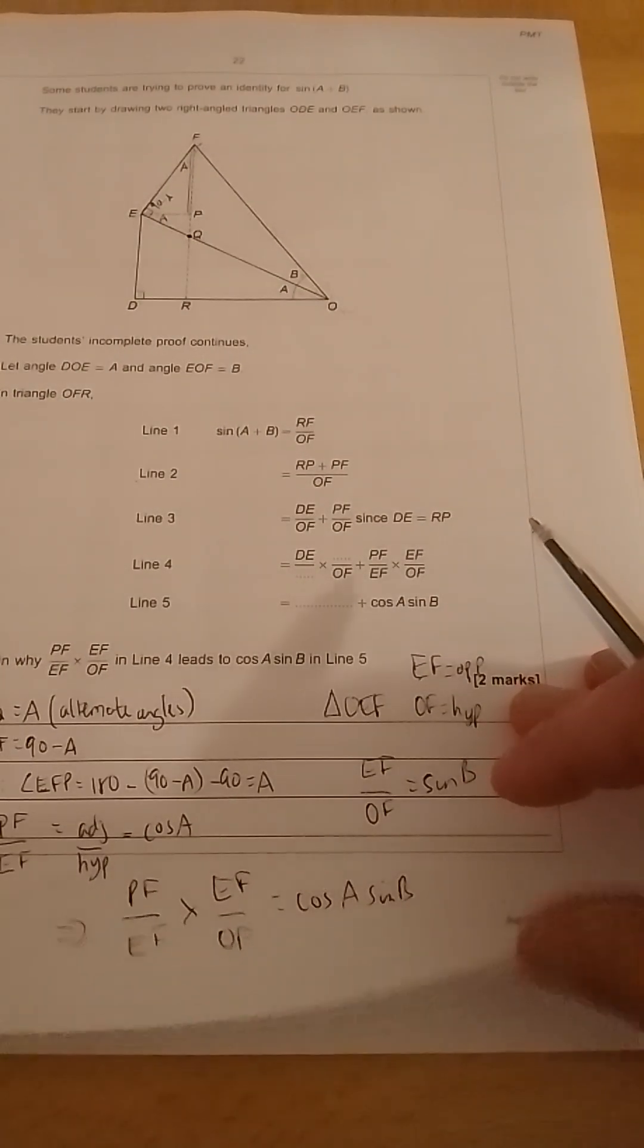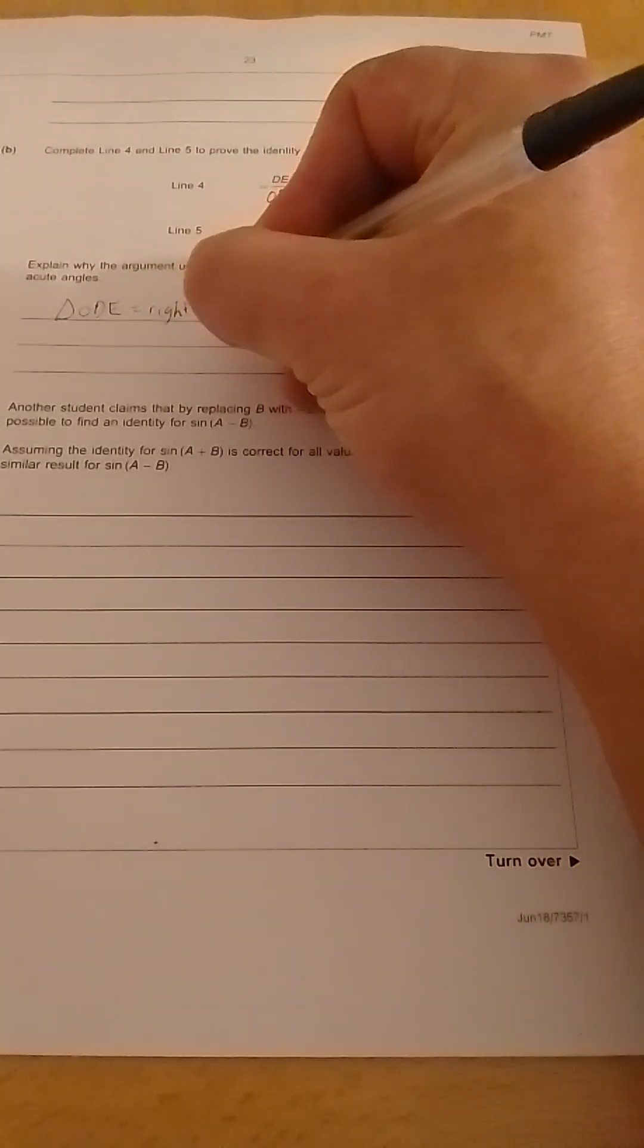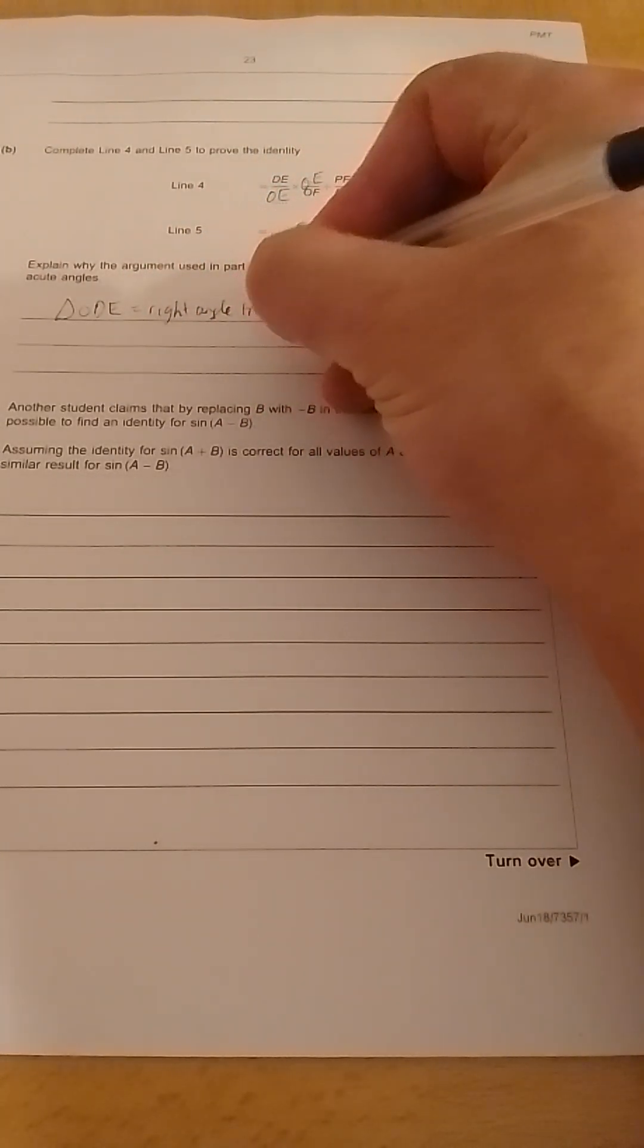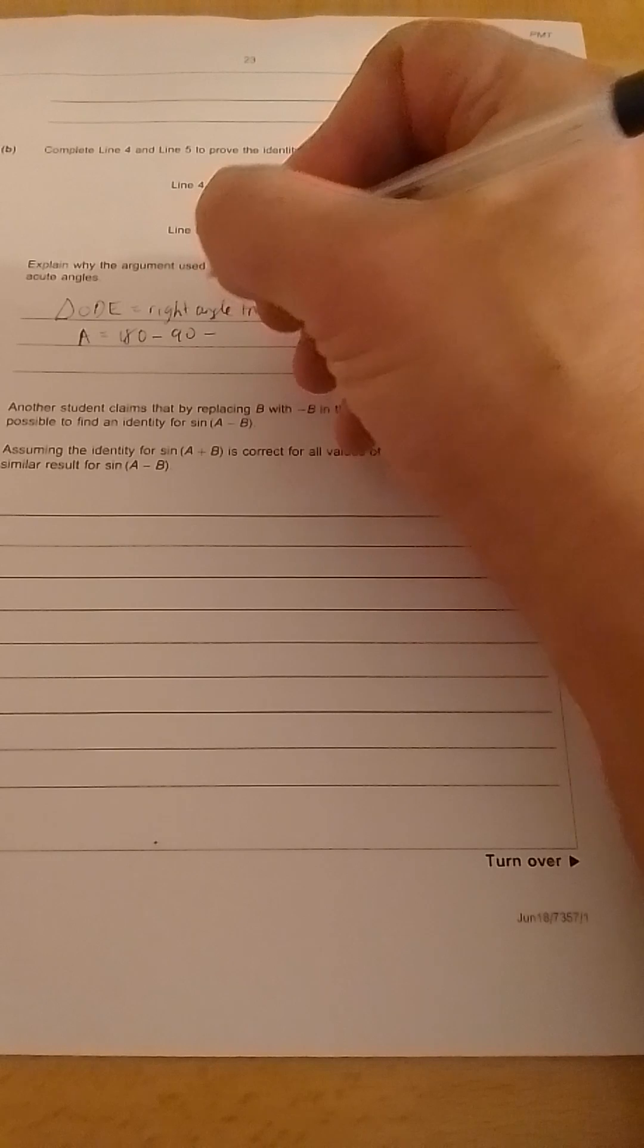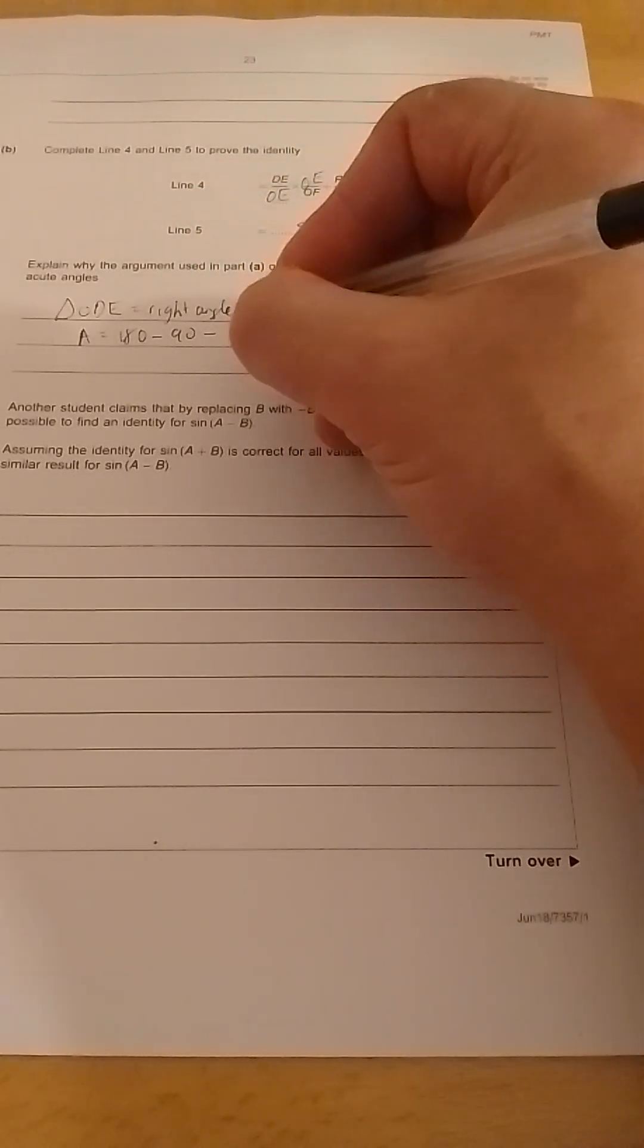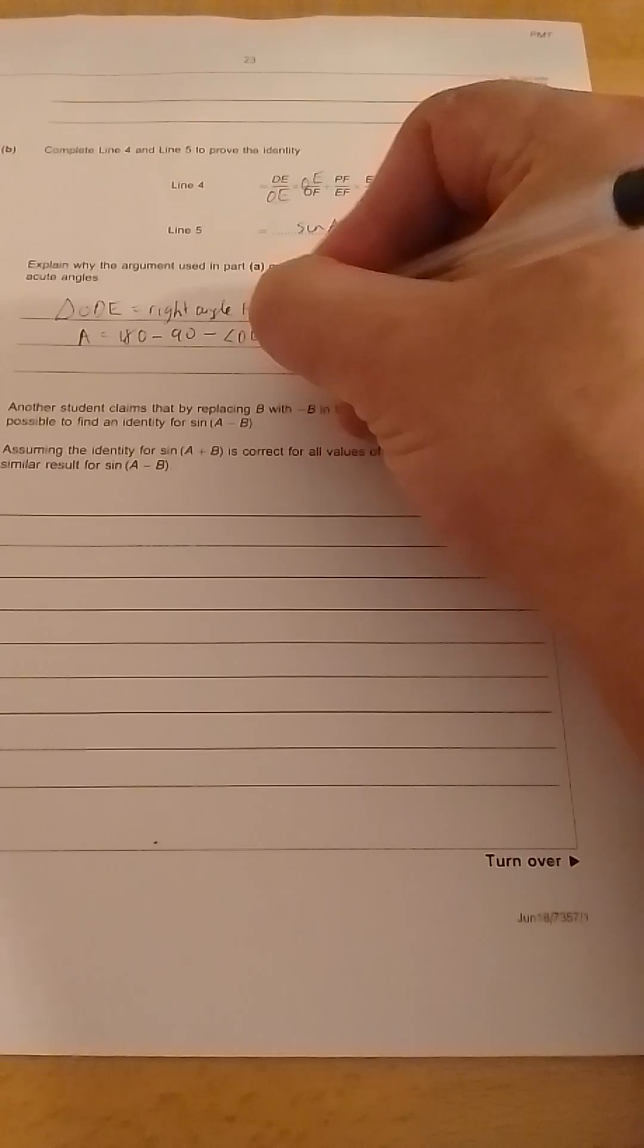We know that we have a right angle and another angle. So we can say that triangle ODE is a right angle triangle, which says A is equal to 180 minus 90 degrees minus, if you go back to the diagram, you'll see it's DEO is the other angle of the triangle. So A has to be less than 90 degrees.